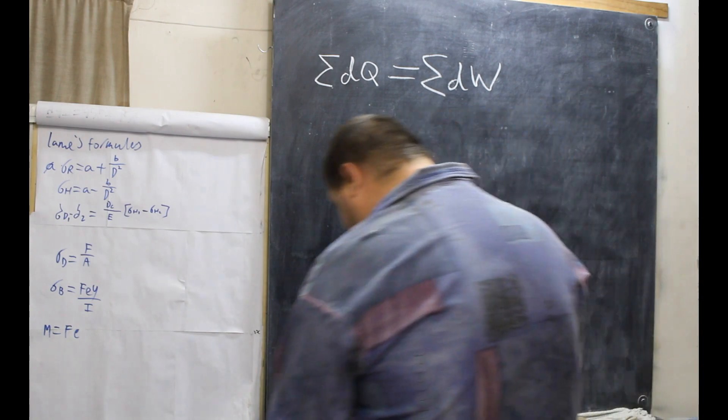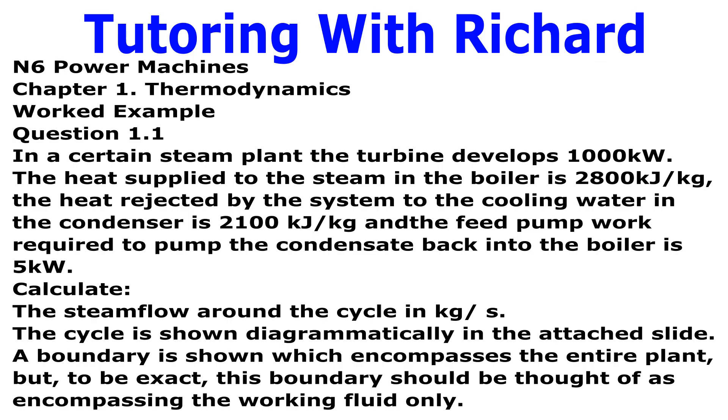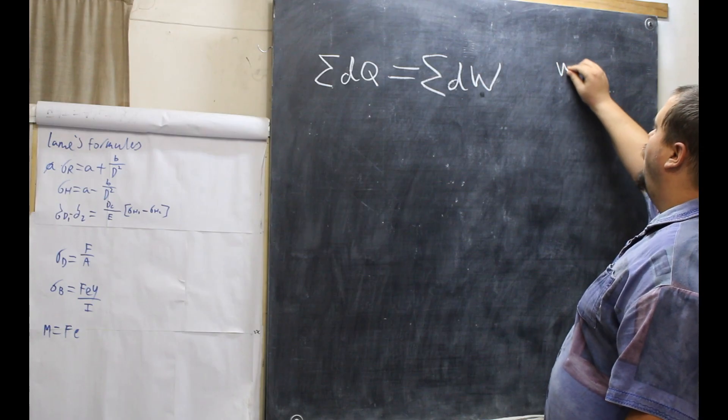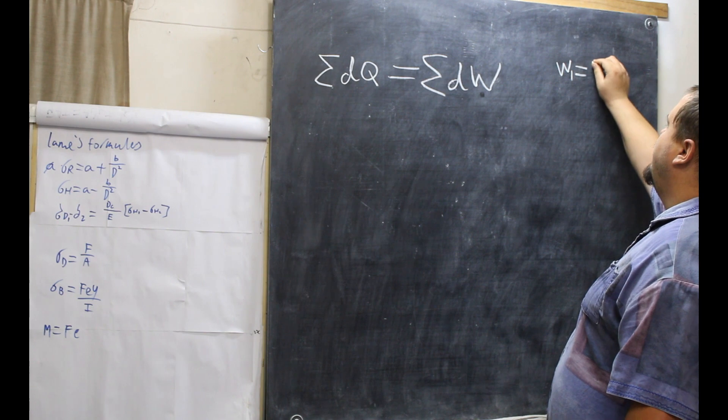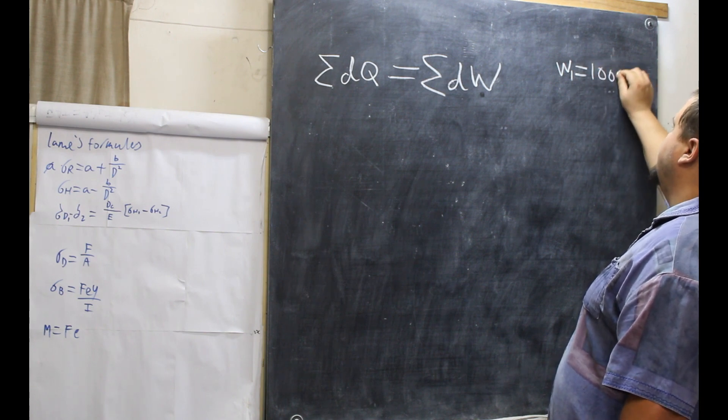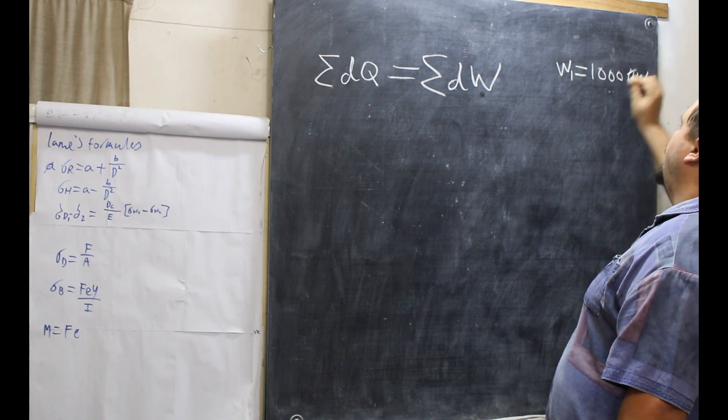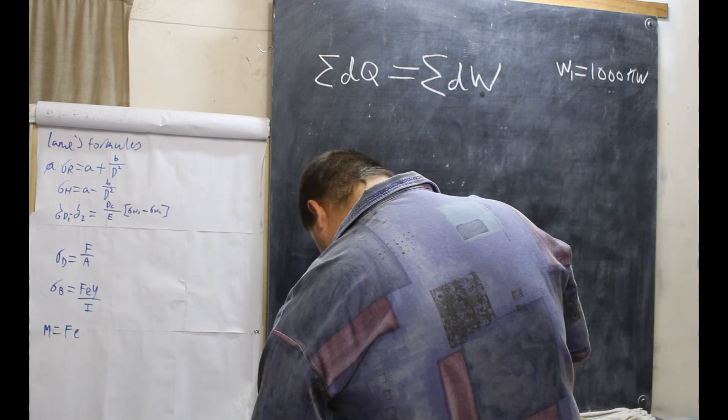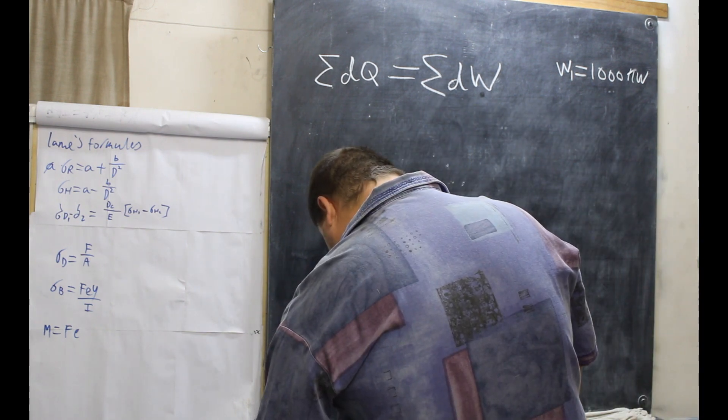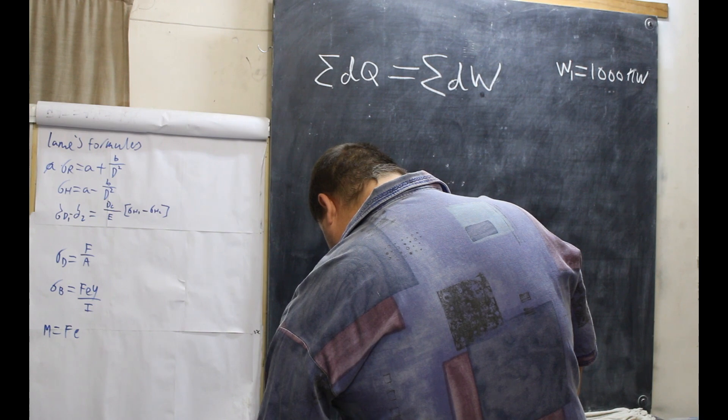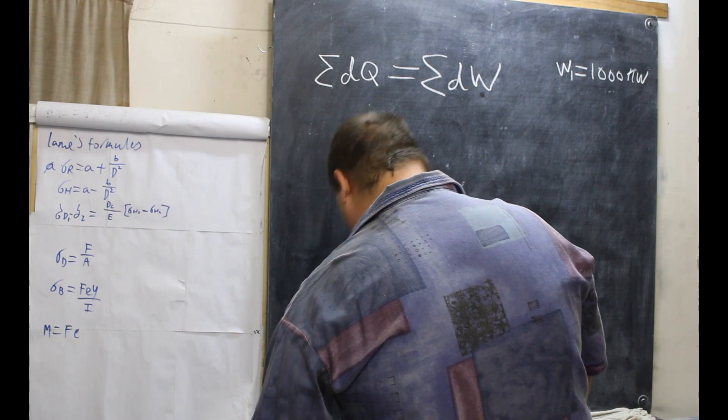What we need to understand is the sum states: In a certain steam plant, the turbine develops 1000 kilowatts. So that means work done, work one develops 1000 kilowatts.